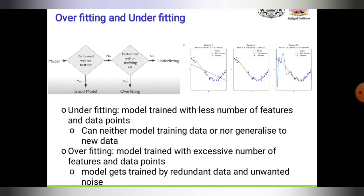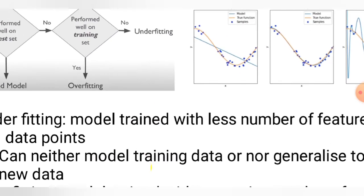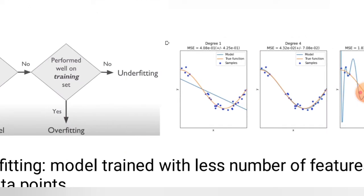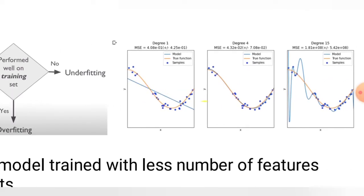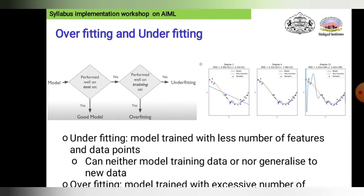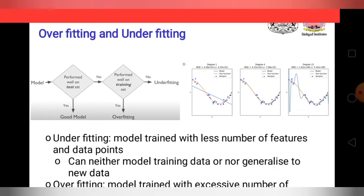In shorter terms: a good model is one where the model and true function overlap each other and sample values are nearest to the overlapping curves. Underfitting means there are fewer samples near each other but with a lot of distance between model and true function. Overfitting means there are many data points with a lot of noise created.